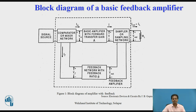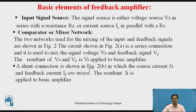This figure shows the basic feedback amplifier block diagram. Now let us discuss each block one by one, starting from the input signal source. The input signal source provides either voltage VS or current IS. The signal source is either a voltage source VS in series with its internal resistance RS, or a current source IS in parallel with its internal resistance RS.